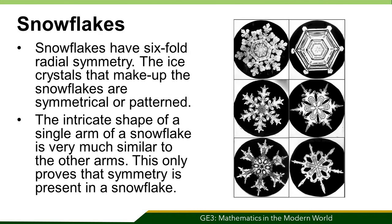Snowflakes also show beautiful symmetries. Snowflakes have six-fold radial symmetry. The ice crystal cells that make up the snowflakes are symmetrical or patterned. The intricate shape of a single arm of a snowflake is very much similar to the other arms. This only proves that symmetry is present in a snowflake.